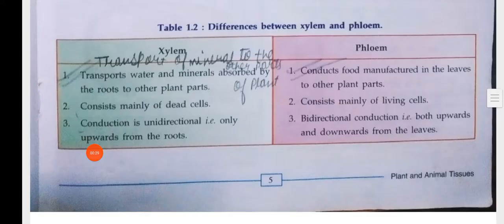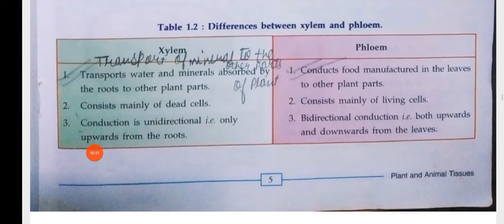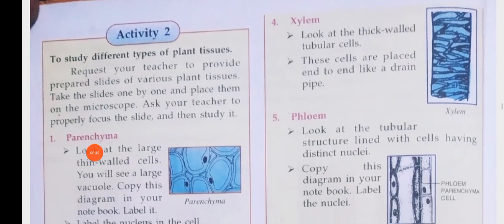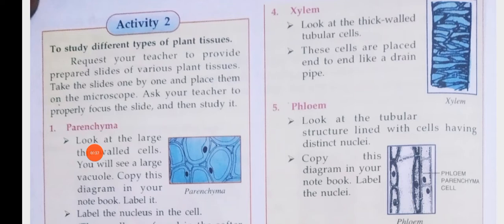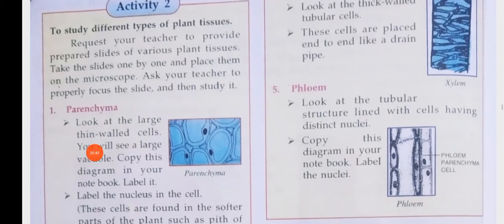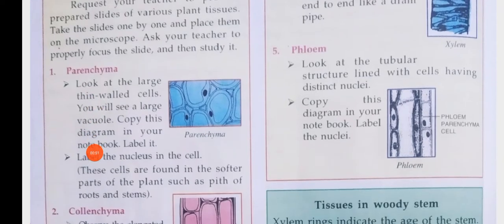In Part 1, we also read the difference between xylem and phloem. So if you want to study different types of plant tissues, how do you do it? You request your teacher to provide slides with many plant tissues. You will see them one by one under the microscope. Ask your teacher to properly focus the slide and then study it.